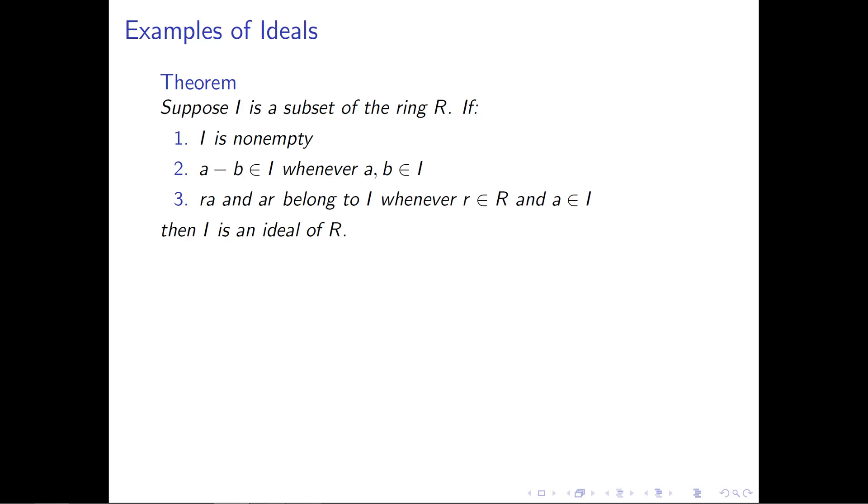The proof is straightforward. If you go back to condition three and require that r belong to I (not just R), then the statement is exactly the subring test. If r does not belong to I, then we need this condition satisfied because that's built into the definition of an ideal.